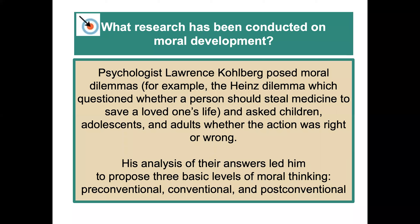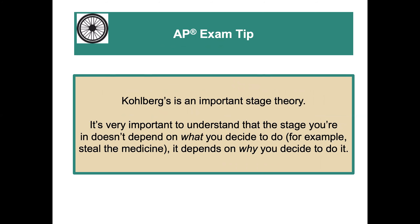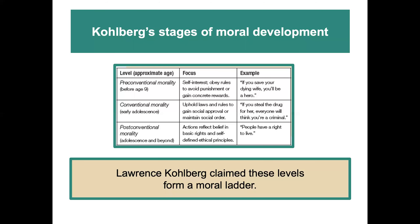Moral development research — one of the key names to associate here is Lawrence Kohlberg, who did a lot of work in this area, building on some of Piaget's ideas. He posed moral dilemmas; for example, the most famous one was the Heinz dilemma, which questioned whether a person should steal medicine to save a loved one's life. He asked children, adolescents, and adults whether the action was right or wrong. His analysis of their answers led him to propose three basic levels of moral thinking: pre-conventional, conventional, and post-conventional. Importantly, the stage you're in doesn't depend on what you decide to do — it depends on why you decide to do it.